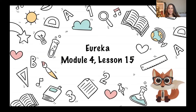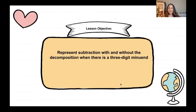Welcome back second graders. Today we're on Eureka module 4 lesson 14. Let's check out our objective: we're going to represent subtraction with and without decomposition when there is a three-digit minuend. That means we're going to have a three-digit number on top and subtract a two-digit number below.